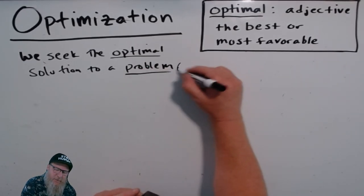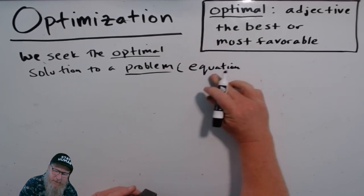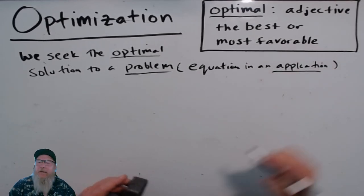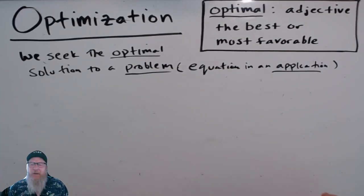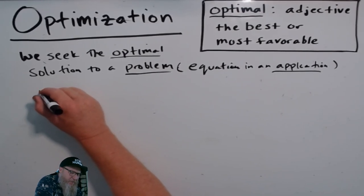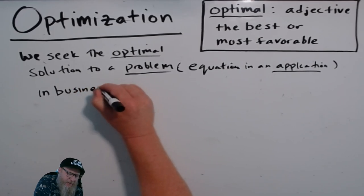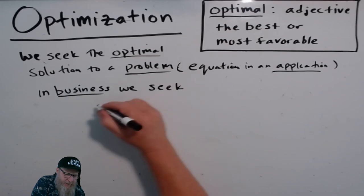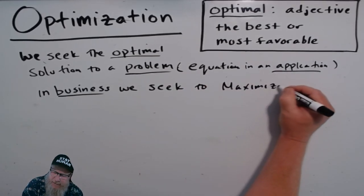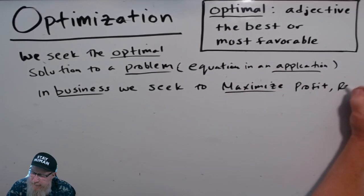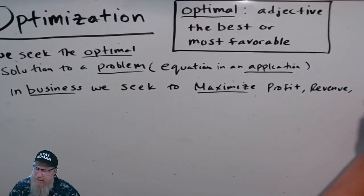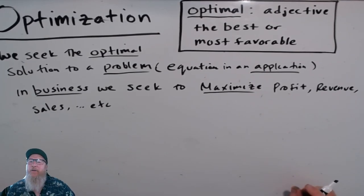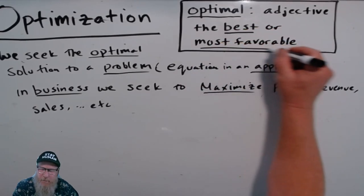A problem is probably given by an equation in an application — a calculus application. So without any further ado, we'll go ahead and get started. In business, we typically seek to maximize profit, revenue, sales, etc. So things of that nature — we seek a maximal or maximum value. That's what we would consider the best or most favorable outcome.